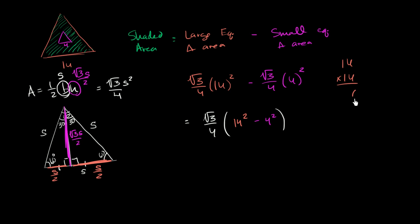4 times 14, 4 times 4 is 16. And then carry the 1. 4 times 1 is 4 plus 1, so it's 56. And you put a 0 right there, because we're multiplying by 10 now. 10 times 14 is 140. And so this is 196.